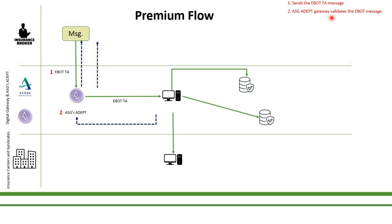If the message is correct and has no problems, the L3 acknowledgement will be sent back to the broker, acknowledging that the E-Bot Technical Account message sent is absolutely fine and accepted by the Accord ASG gateway. The ASG gateway then leverages ADAPT to route the message to the IPaaS system.